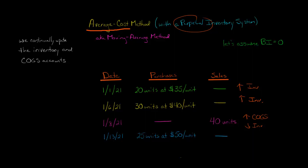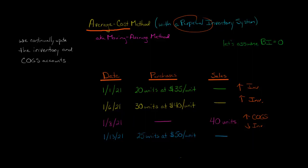There will also be a credit to sales and so forth, but let's just focus on the inventory and cost of goods sold. Because we're using a perpetual method, we do not wait until the end of the period. As of January 8th, we need to make an entry where we're going to debit cost of goods sold and credit inventory. The question is, how much?